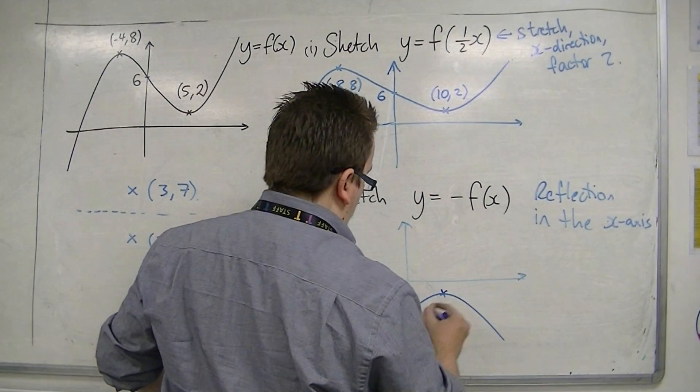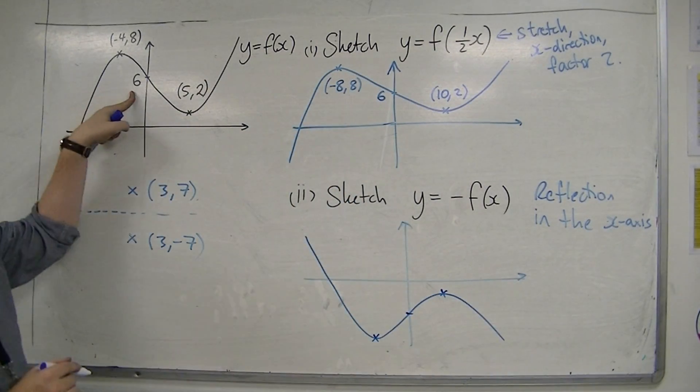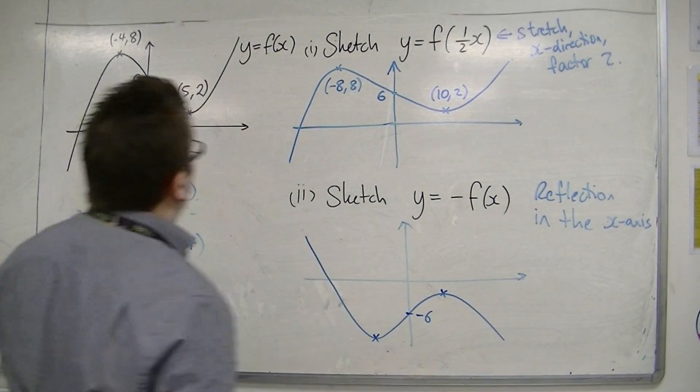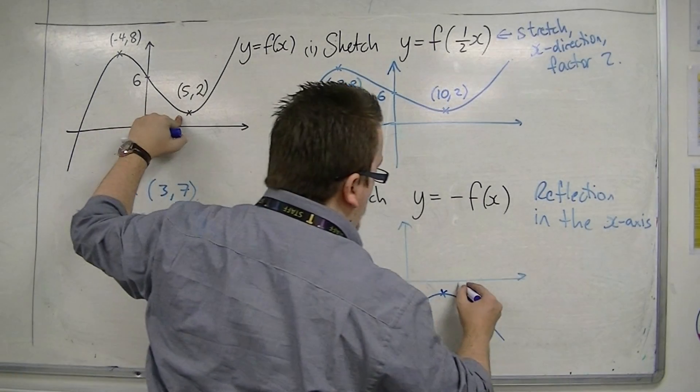So I would now have these three points that must be identified. The 6 will now be at minus 6. This stationary point, 5, 2, will now be at 5, minus 2.